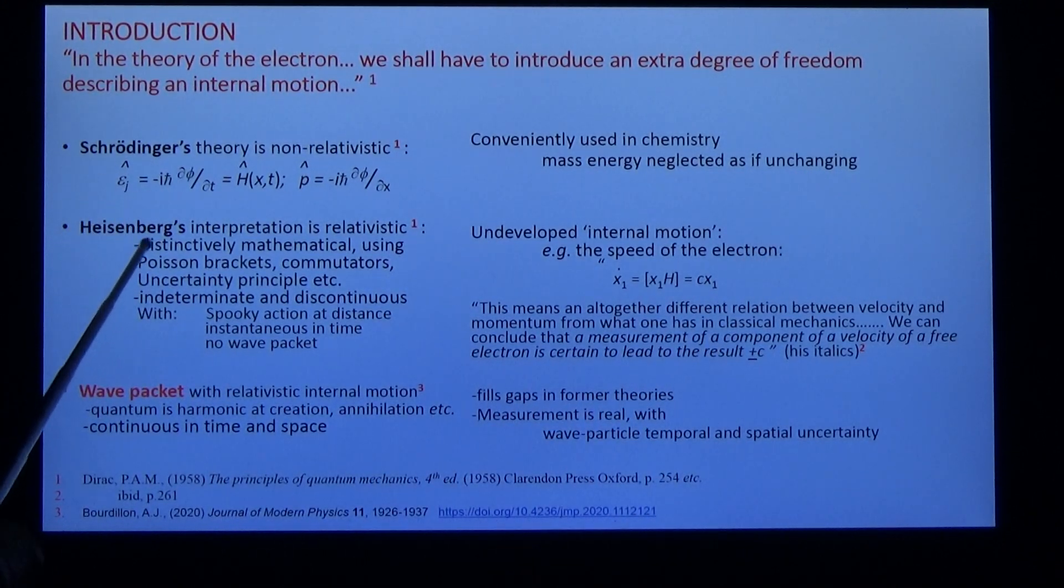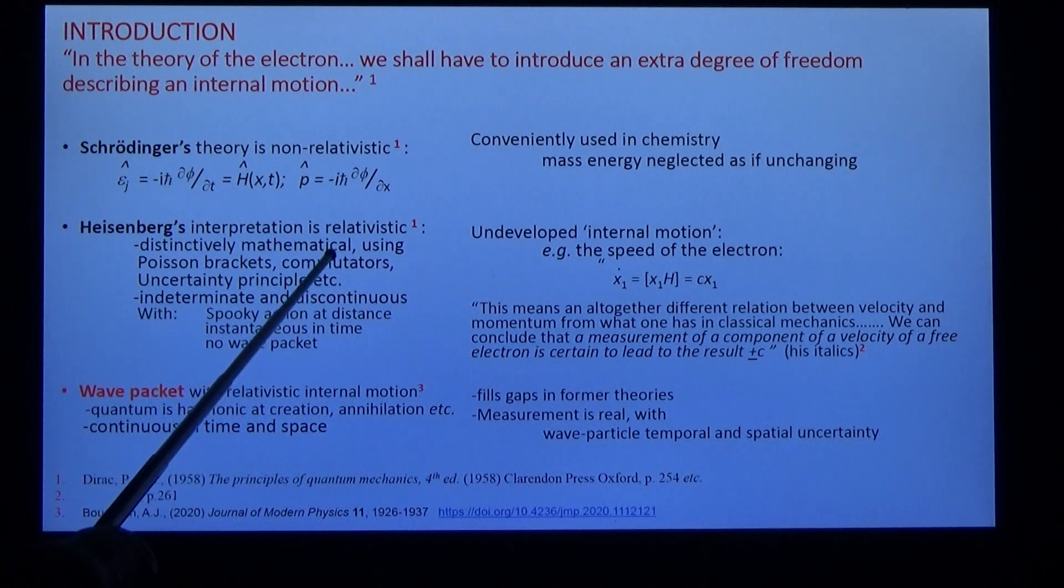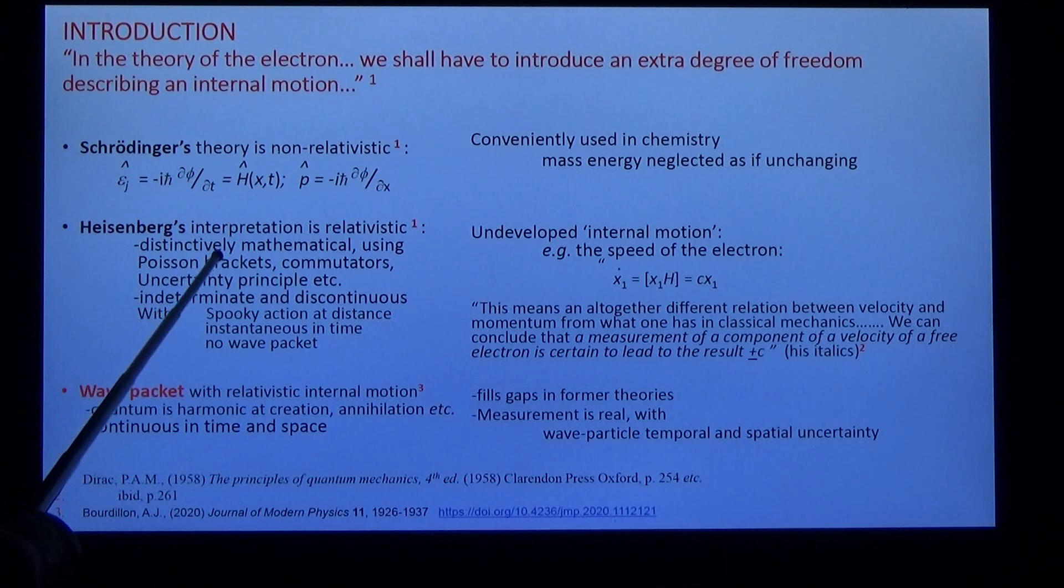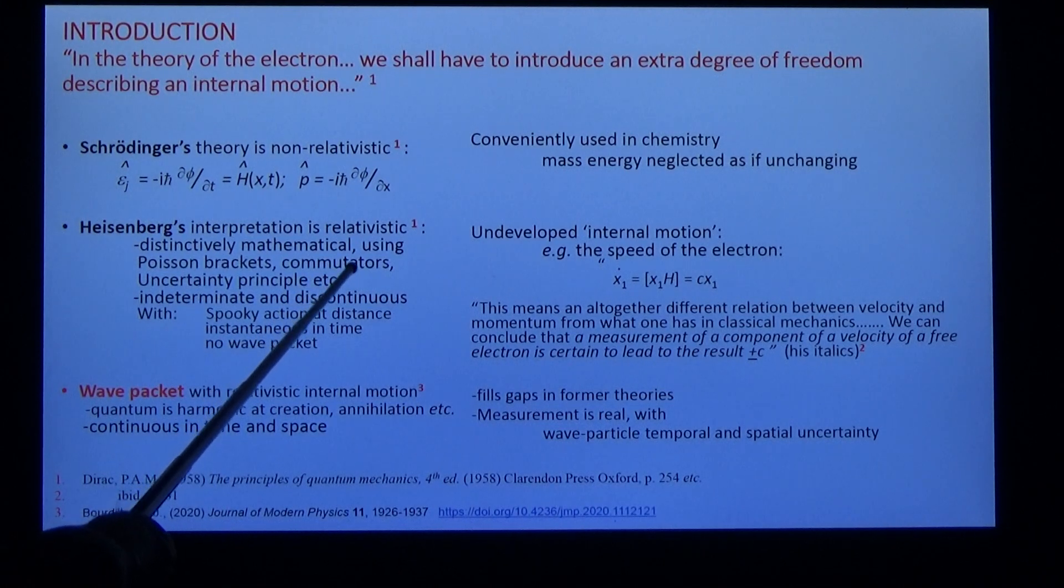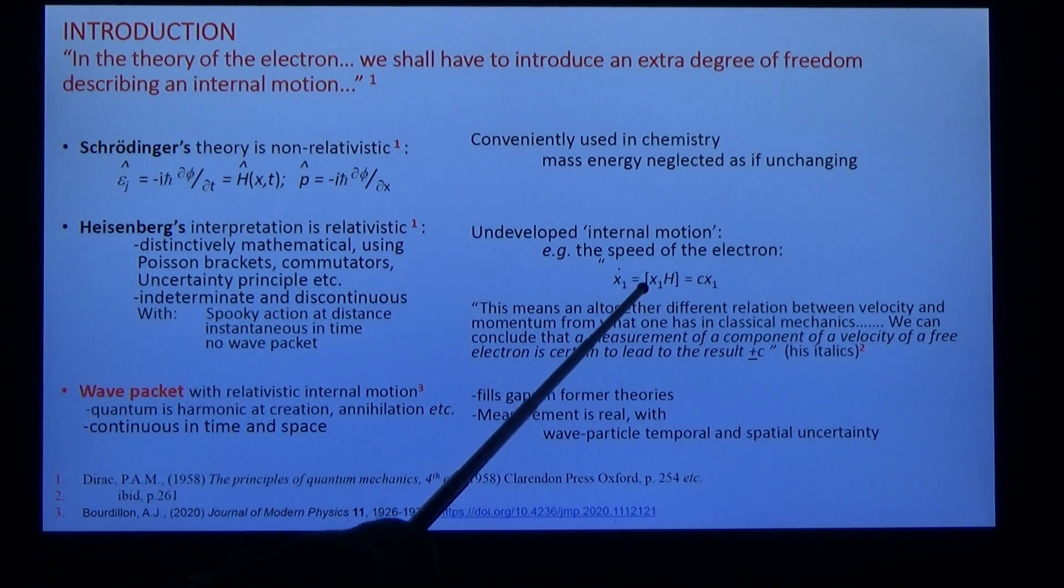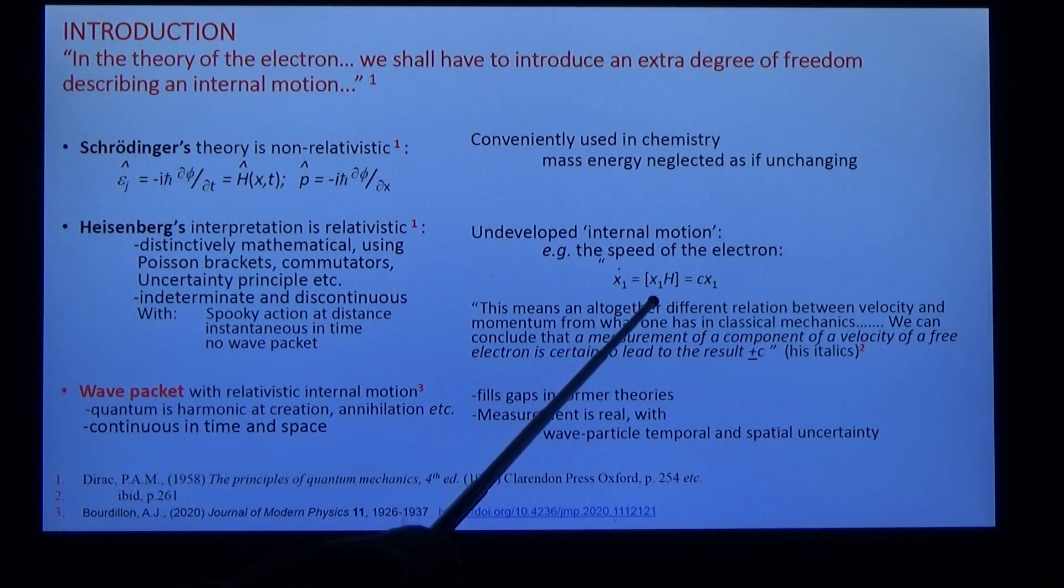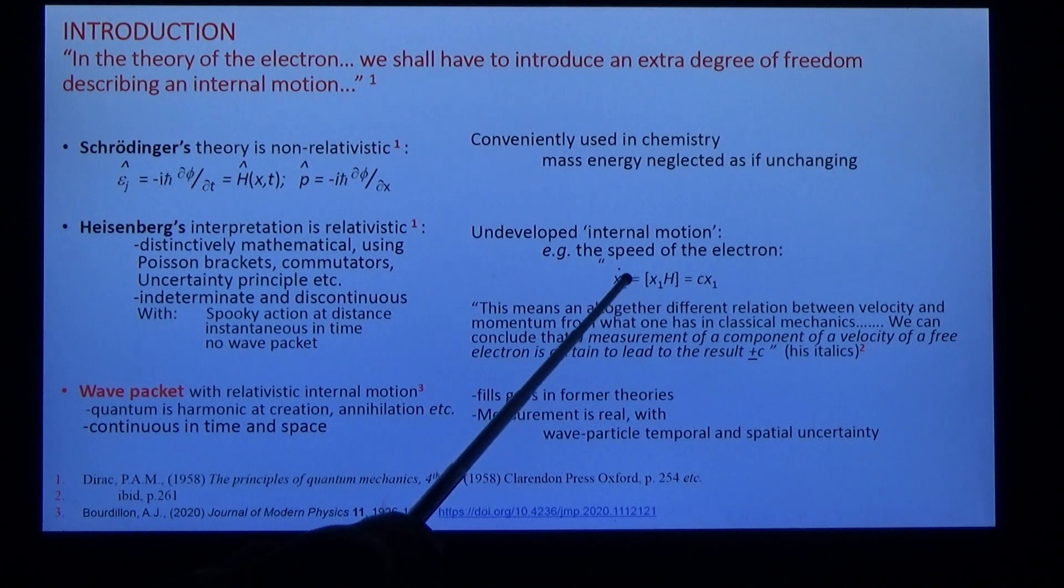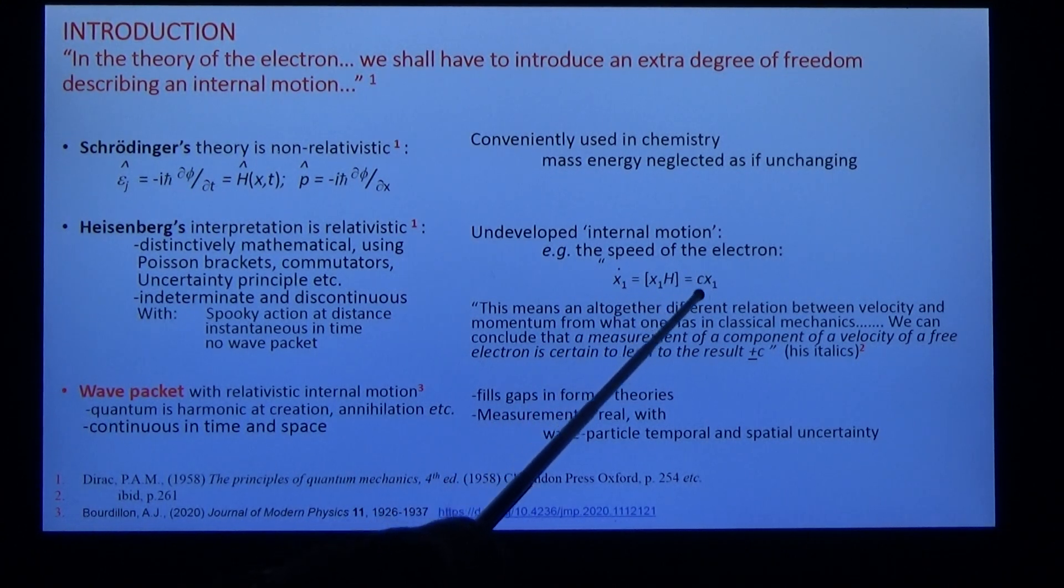Heisenberg's interpretation is relativistic. It's distinctly mathematical, using Poisson brackets and commutations. For example, Dirac calculated the speed of the electron using this anti-commutating operator, and he found that the speed of the electron is equal to the speed of light.